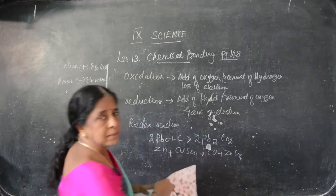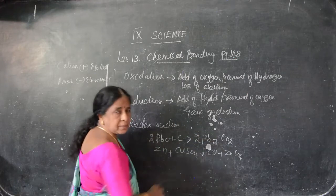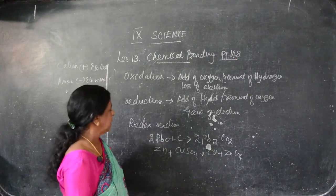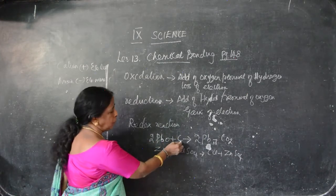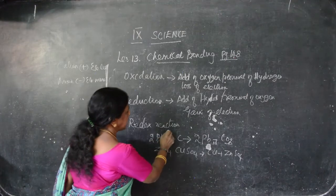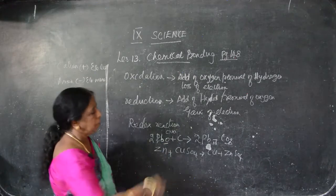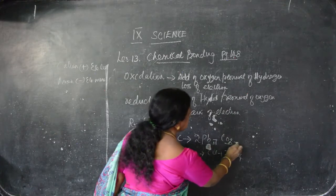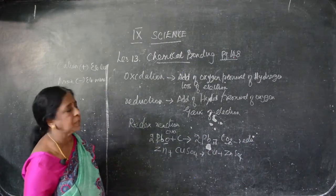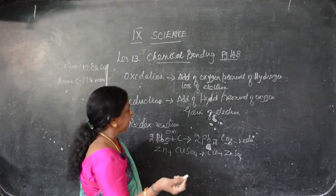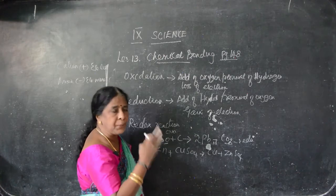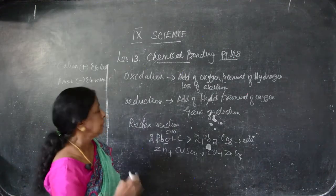Here we see simultaneously: zinc plus copper sulphate gives copper plus zinc sulphate. Before the reaction, we have reactants, after the arrow mark comes the product. Here two oxygen atoms are present in lead oxide; after the reaction, oxygen is removed from lead oxide — so this is reduction. The oxygen is combined with carbon — so this is oxidation. Both oxidation and reduction simultaneously occur — this is known as redox reaction.